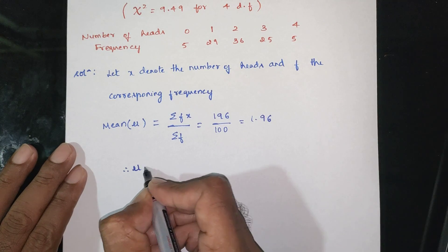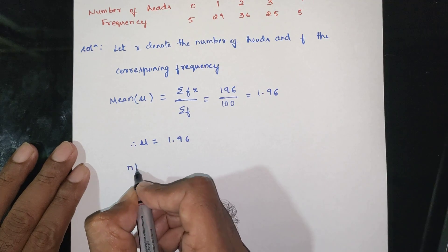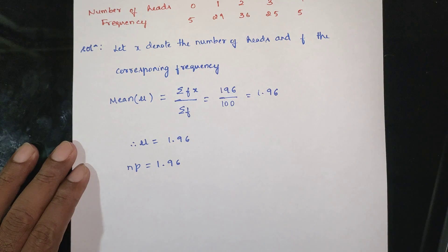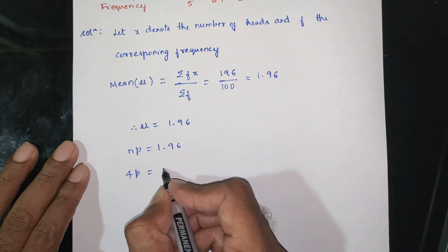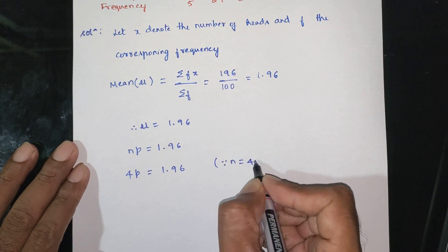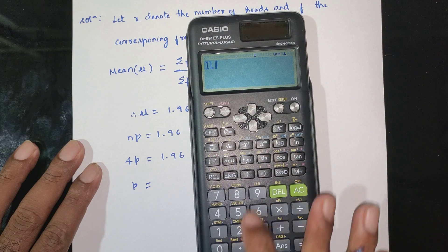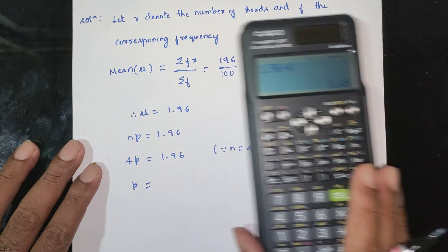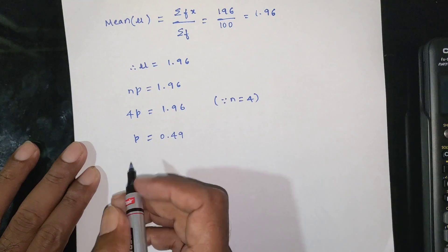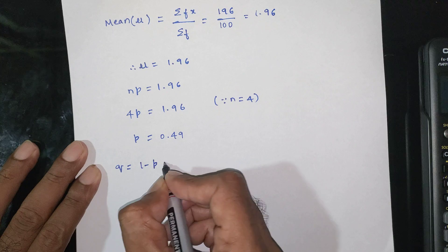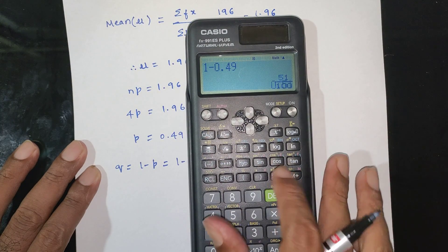Now we have the mean. Therefore mu = 1.96. Since mu = np and n = 4, we have 4p = 1.96. Therefore p = 1.96/4 = 0.49. In the binomial distribution, the mean p equals np, so p = 0.49 and q = 1 − 0.49 = 0.51.